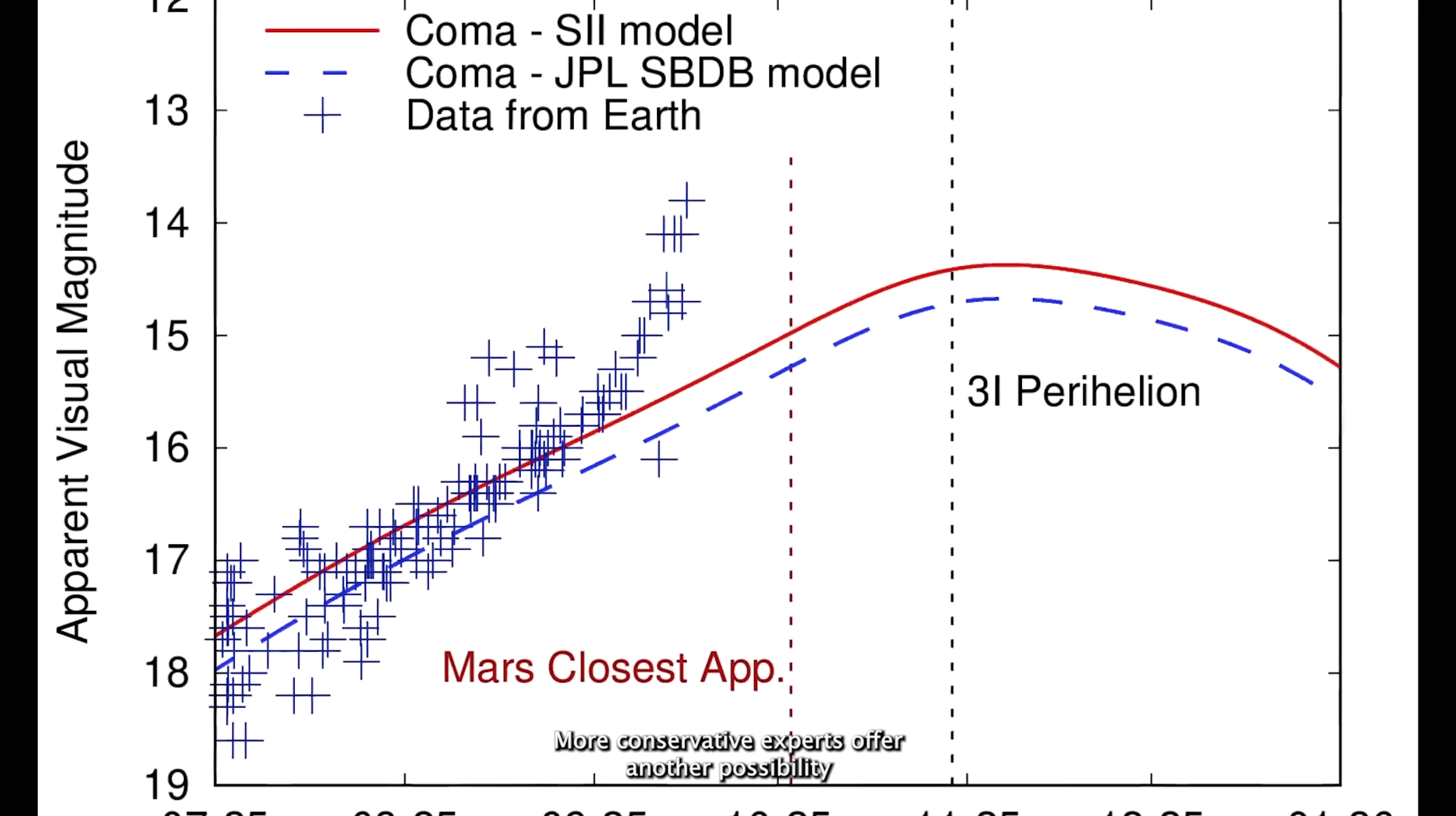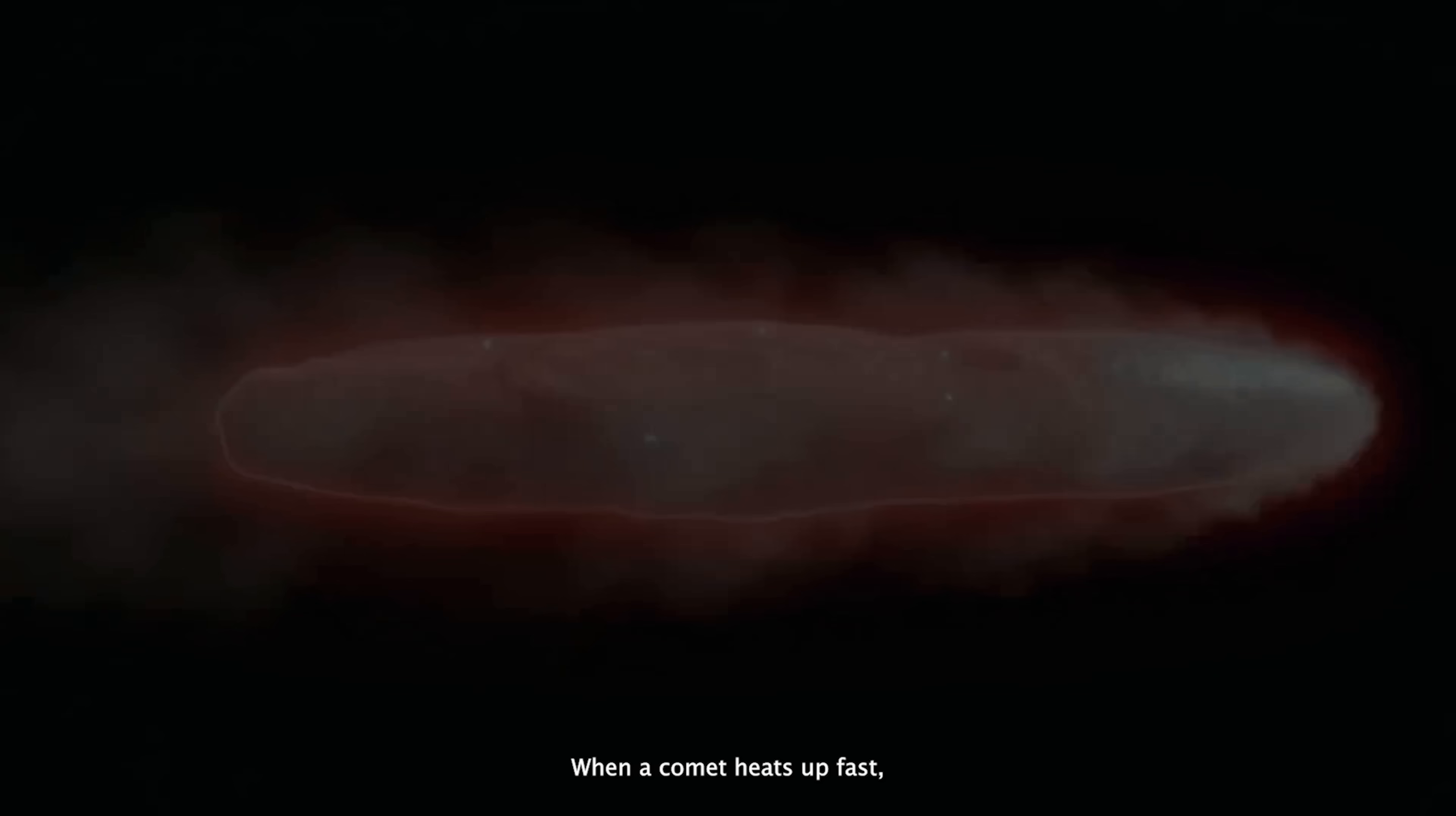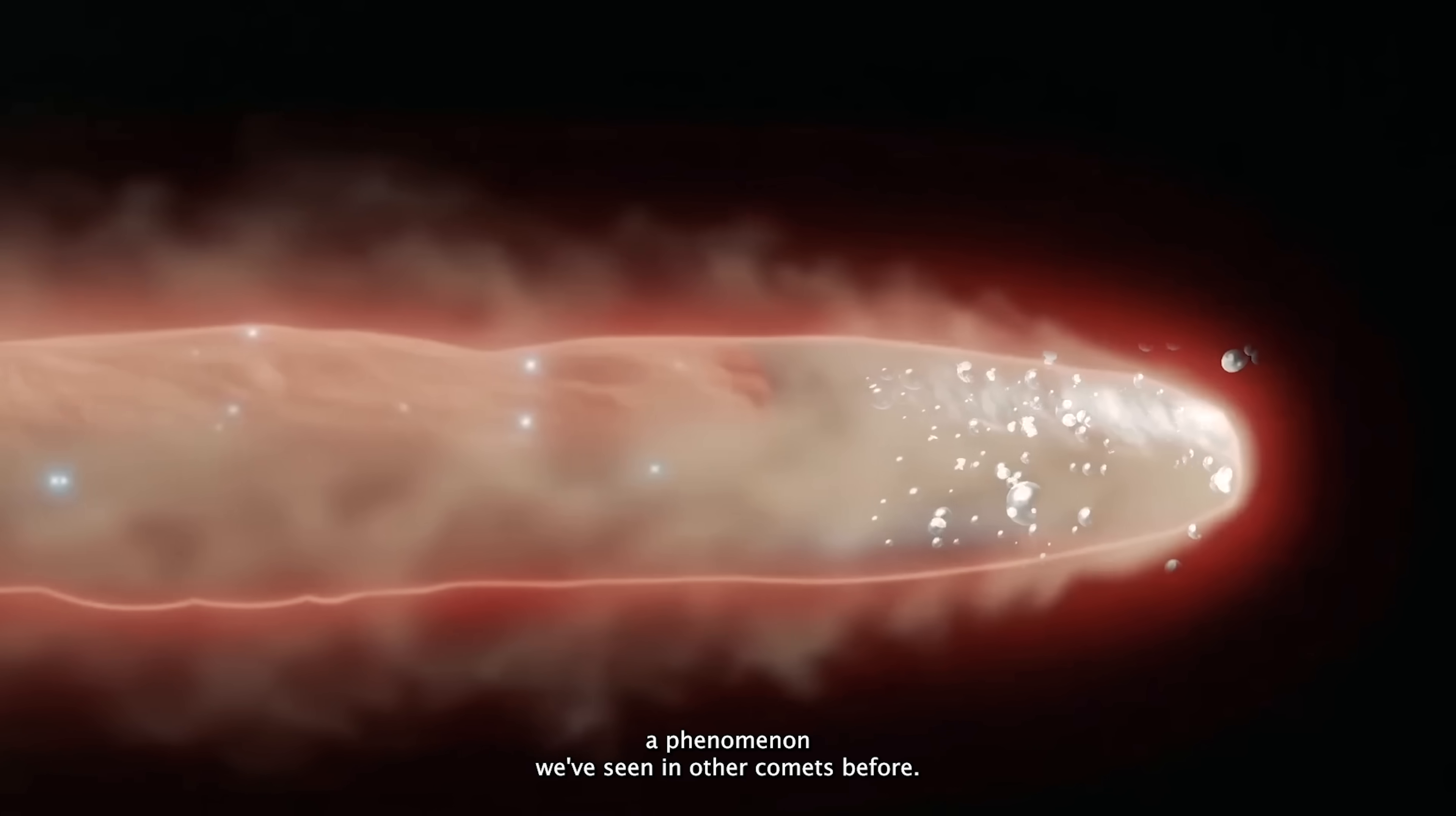More conservative experts offer another possibility. The comet's sudden brightening might be due to rapid evaporation of volatile materials on or just beneath its surface as it draws closer to the sun. When a comet heats up fast, it can eject massive amounts of gas and dust almost overnight, creating a spectacular flare-up known as an outburst, a phenomenon we've seen in other comets before.